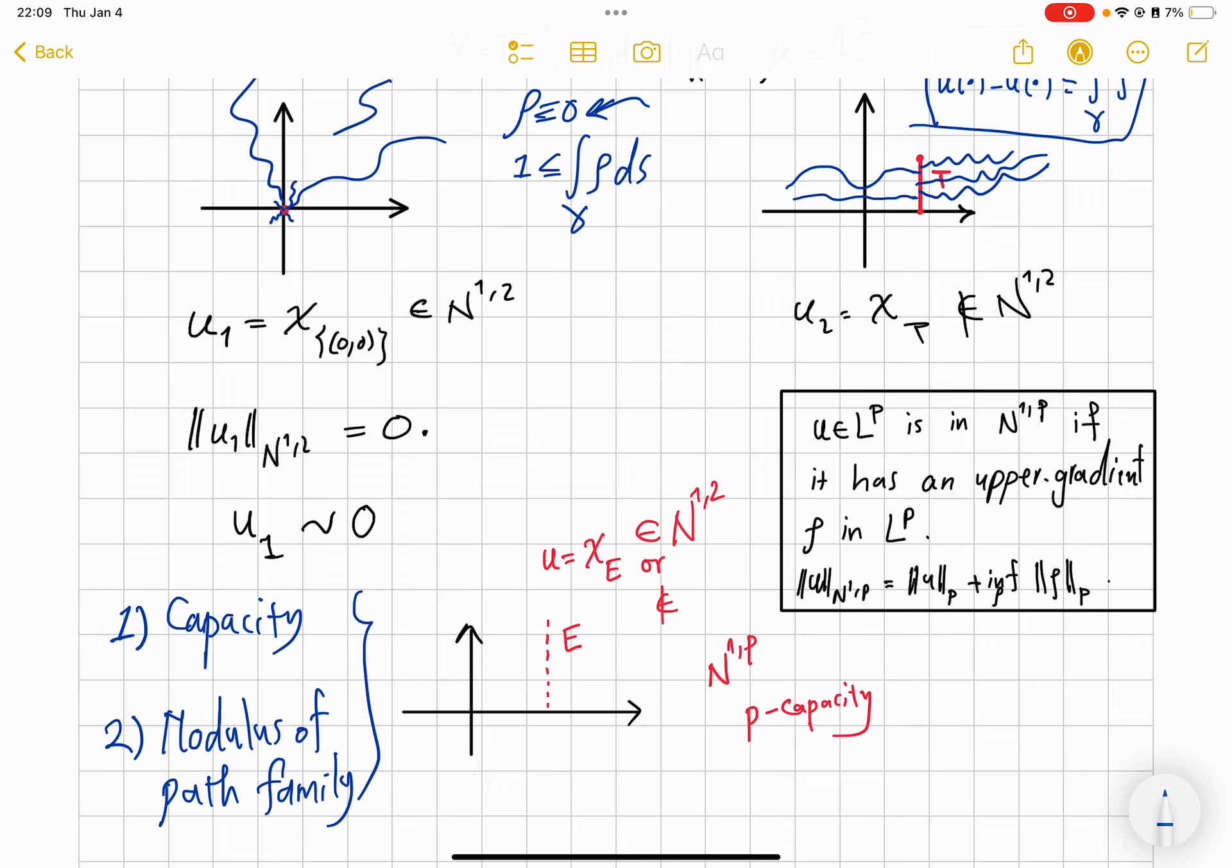And number two, we haven't even looked at multiple examples of metric measure spaces and tried to understand what the Newtonian class N^{1,p} looks like on them, how that class changes with respect to p and whatnot.